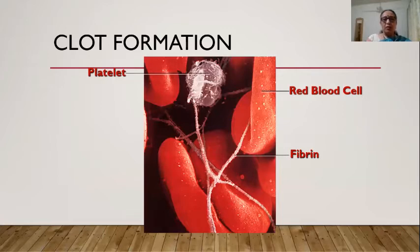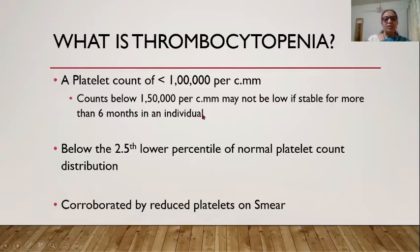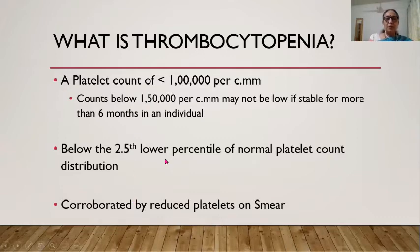Under electron microscopy, a formed clot shows platelets embedded in fibrin strands. A platelet count less than 100,000 per cubic millimeter is generally considered thrombocytopenia, though counts below 150,000 may not be low if stable for more than six months. Strictly, it is defined as below the 2.5th percentile of normal population distribution.